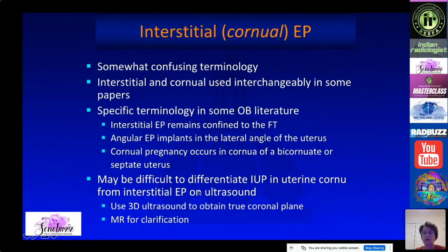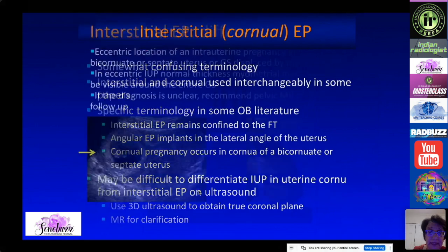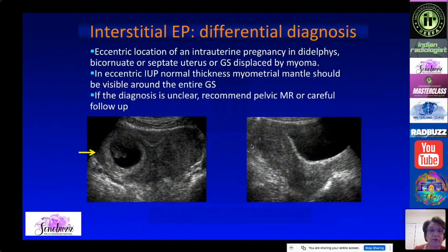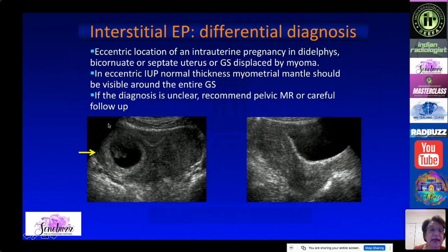It can be difficult to differentiate these entities, and 3D ultrasound may be helpful because you can obtain a true coronal plane. Here is a true cornual pregnancy — it is eccentric because it is in one horn of a bicornuate uterus, but unlike the interstitial cases, you can see myometrium around the gestational sac. If the diagnosis is unclear, careful follow-up or pelvic MRI can be obtained.